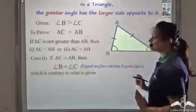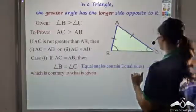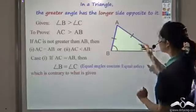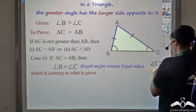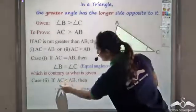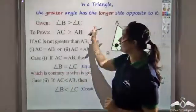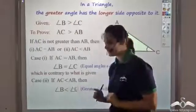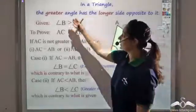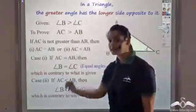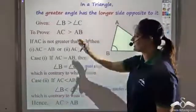Now consider the second case: AC is less than AB. If AB is the larger side, the angle opposite to it — angle C — would be greater than angle B. But again, we are given that angle B is greater than angle C, so this is also contrary to what is given. Both cases are false, hence AC must be greater than AB.